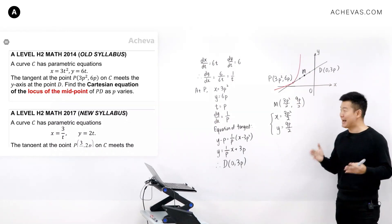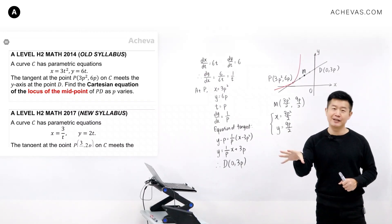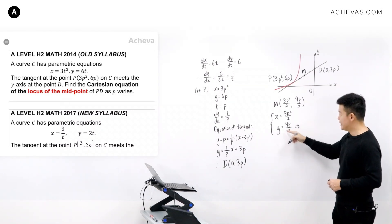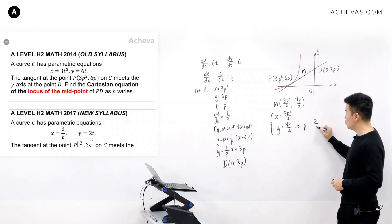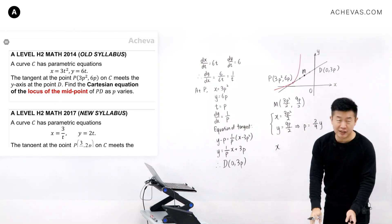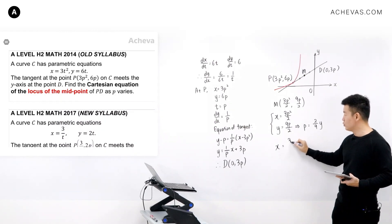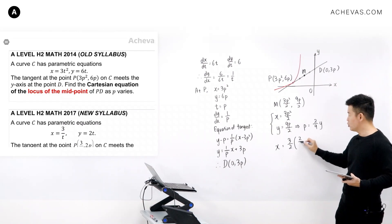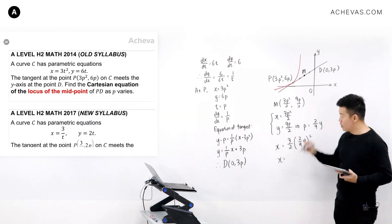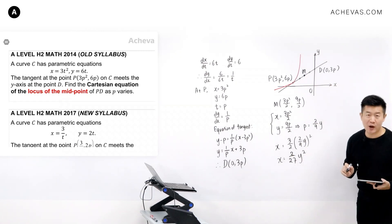We find the Cartesian equation by substitution. From y = 9p/2, making p the subject gives p = 2y/9. Substituting into x = 3p²/2, we get x = (3/2) × (2y/9)², which simplifies to x = 2y²/27. So the Cartesian equation of the locus of the midpoint is x = 2y²/27.